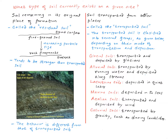Glacial soils are transported and deposited by glaciers. Alluvial soils are transported by running water and deposited along streams. Lacustrine soils are deposited in quiet lakes. Marine soils are deposited in the seas. Aeolian soils are transported and deposited by wind. Colluvial soils are transported by gravity, such as during landslides.